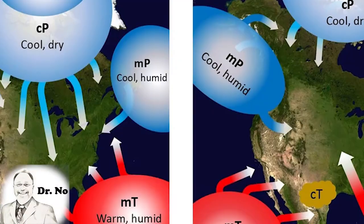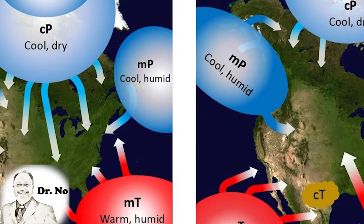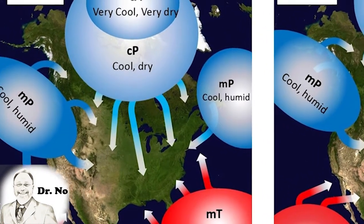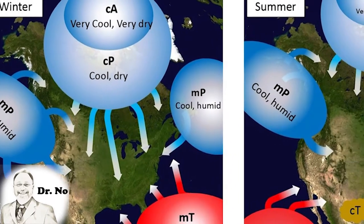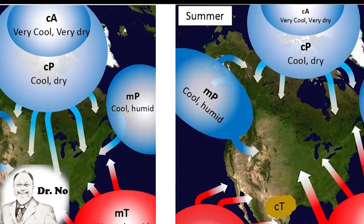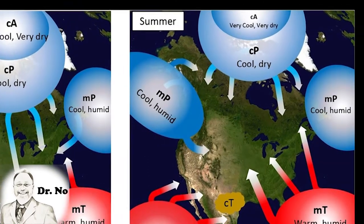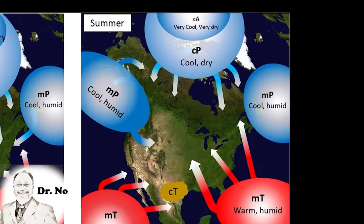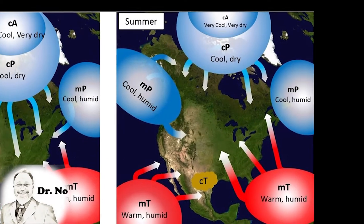Maritime polar air masses are cool, moist, and unstable. Those affecting the United States originate over the North Pacific Ocean and the Northwestern Atlantic Ocean. Since ocean surface temperatures are typically higher than land, maritime polar air can be thought of as milder than continental polar or continental Arctic air. In winter, maritime polar air is associated with nor'easters and generally gloomy days. In summer, it can lead to low stratus clouds, fog, and periods of cool, comfortable temperatures.